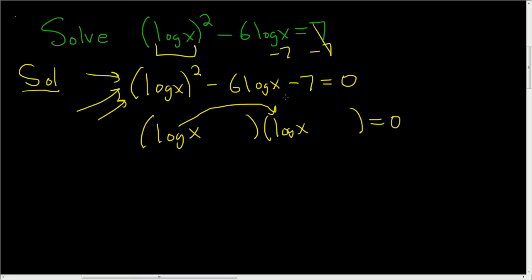All right, we need two numbers that multiply to negative 7 but add to negative 6. So it looks like negative 7 and positive 1 should do the job, right? Because if you take the inside, you get negative 7 log x. And if you take the outside, you get log x. If you add log x to negative 7 log x, you get negative 6 log x. And negative 7 times 1 is negative 7. So everything looks OK.